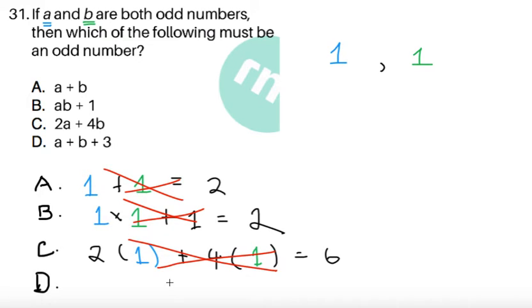So A, B, C are crossed out, so it must be the case that D must be the answer. So just to verify, let's try A plus B plus 3. It's going to be 1 plus 1 plus 3, and this gives us 5, and this is indeed an odd number.